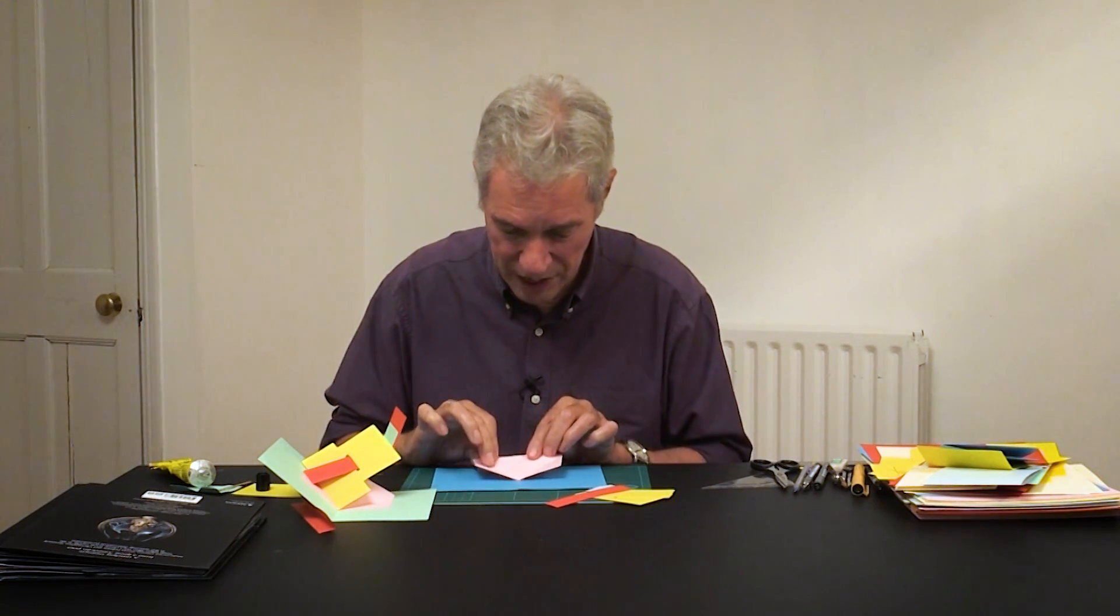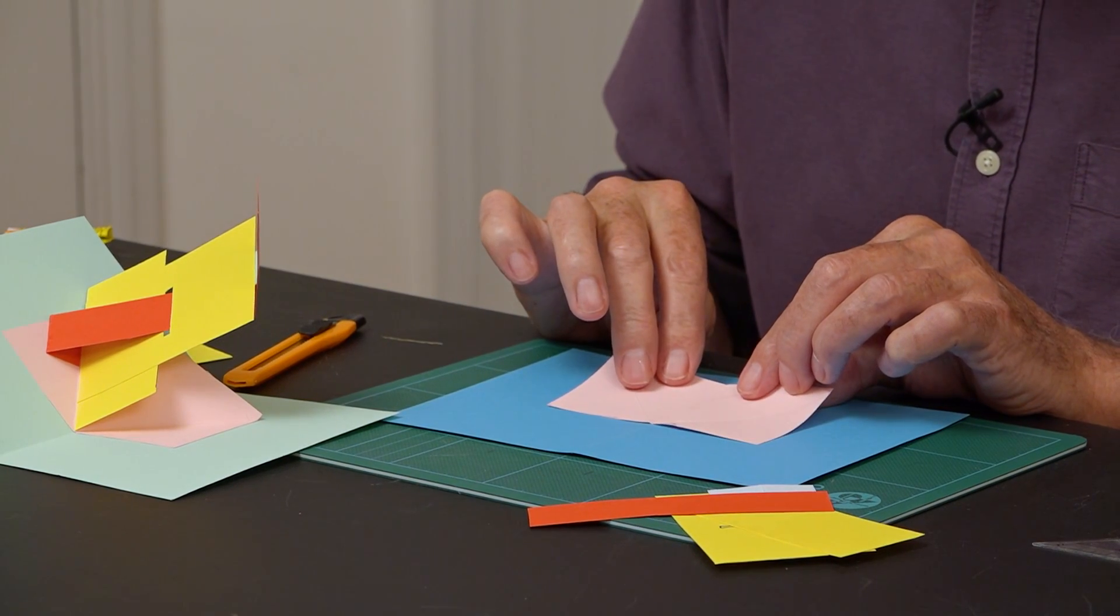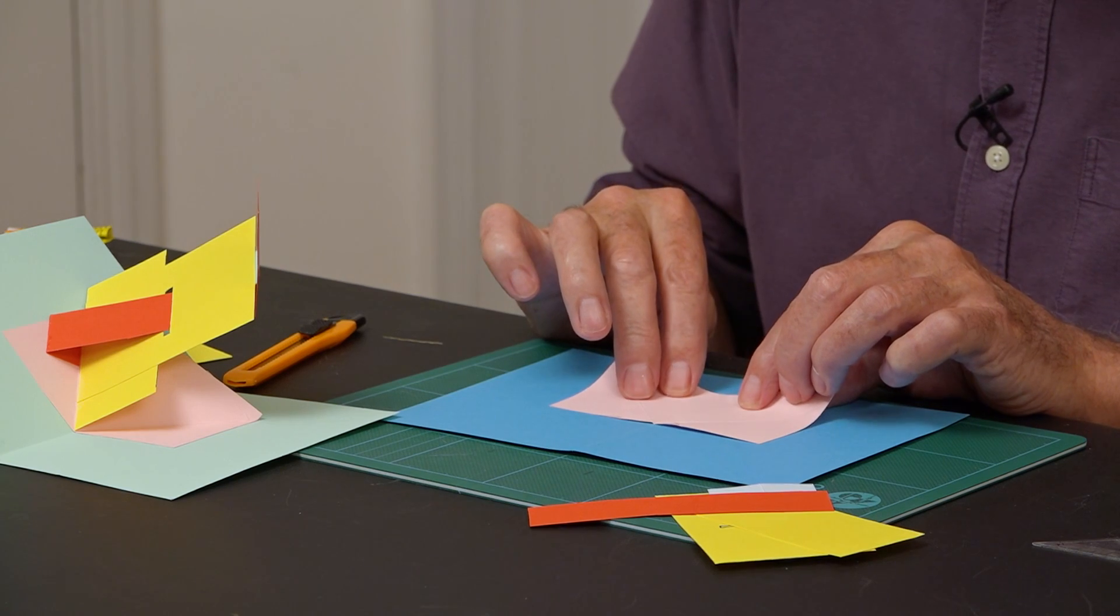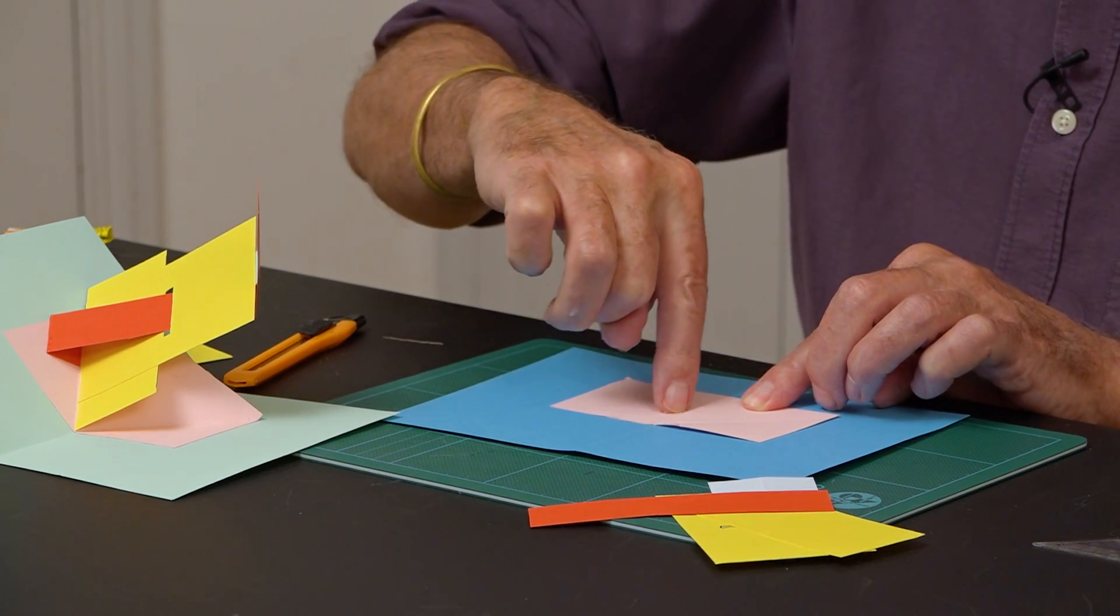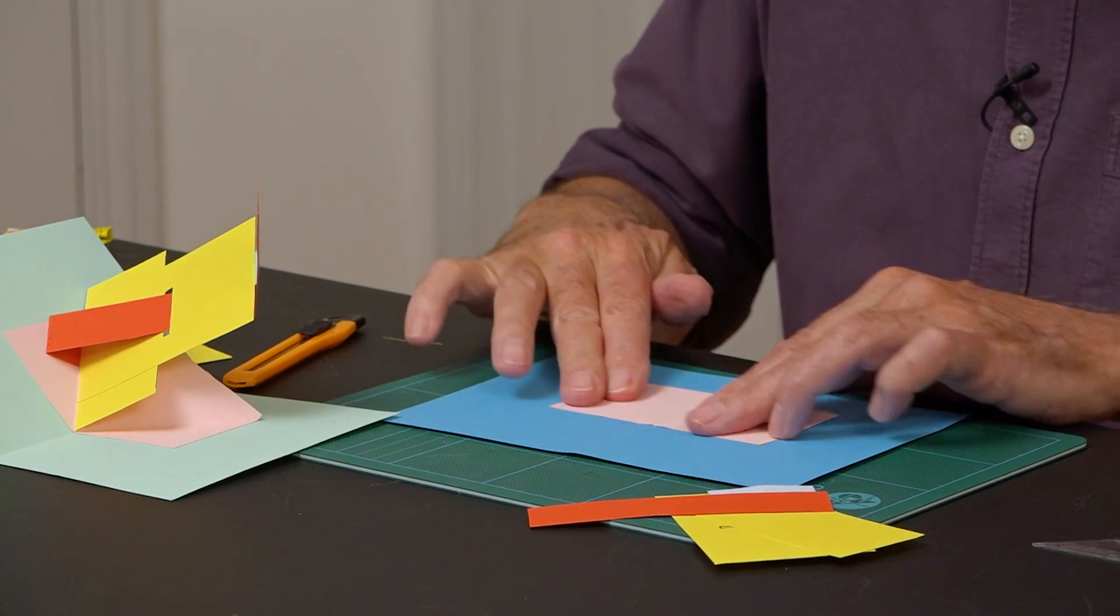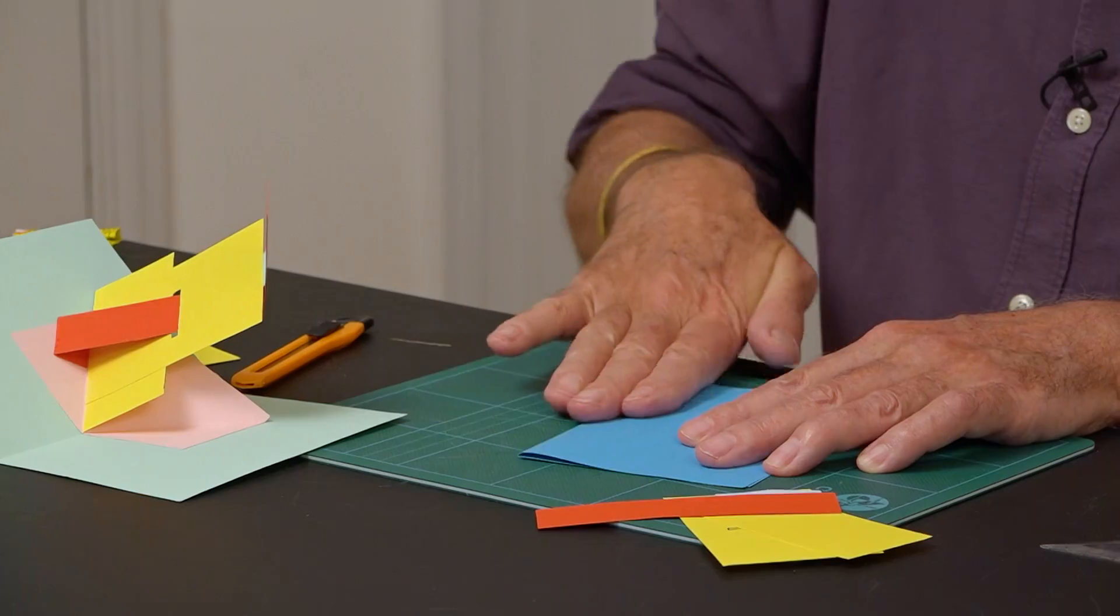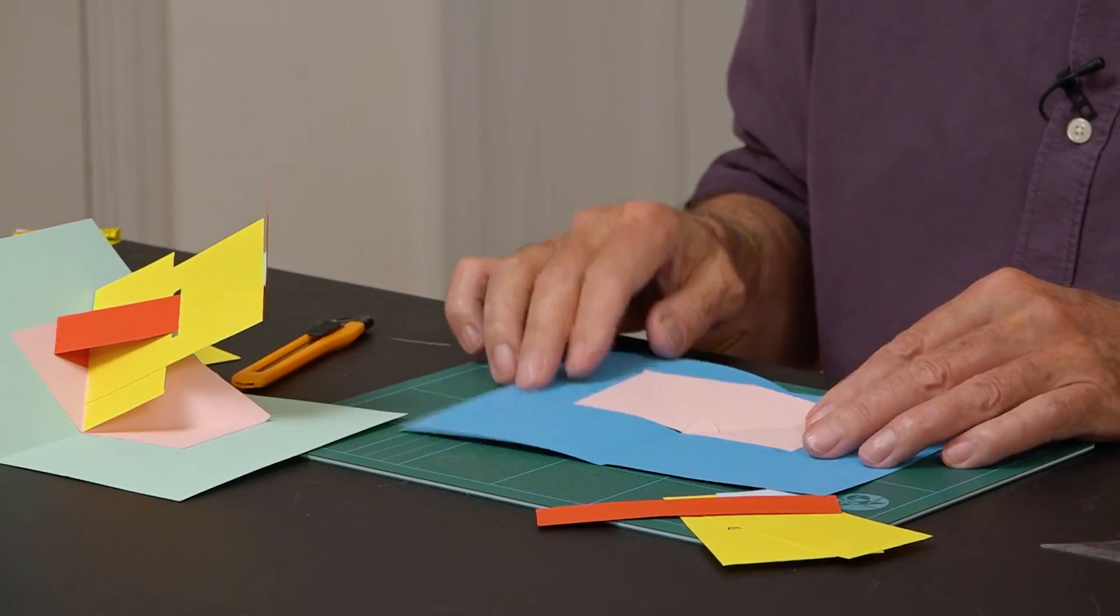So I'll position it on there. Make sure the central crease of the pop-up is aligned with the central crease of the base. Stick it down. Fold it shut just to make sure that everything's working smoothly. There we are.